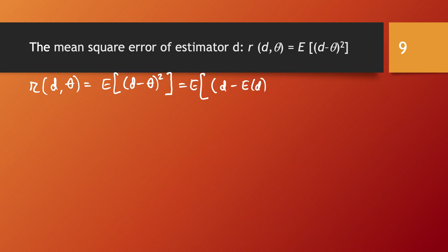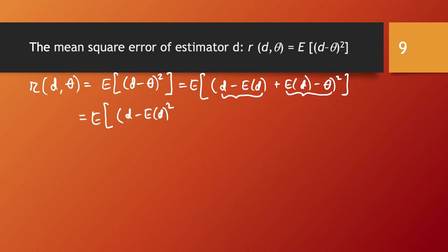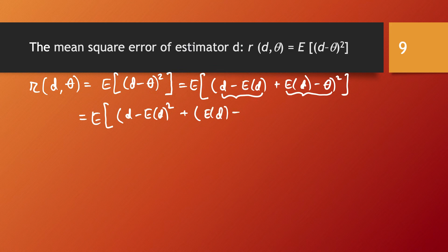I'm going to force something algebraically: I write D minus the expected value of D, and so that I don't change anything I also add the expected value of D, minus theta — all squared. This is the expected value of a sum of two terms raised to the power of 2, giving: the expected value of (D minus E[D])² plus (E[D] minus theta)² plus two times their product.